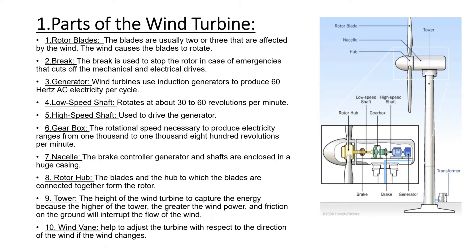The brake, controller, generator, and shaft are enclosed in the nacelle. The rotor hub is the component to which the blades are connected, forming the rotor. The tower supports the turbine above the ground.